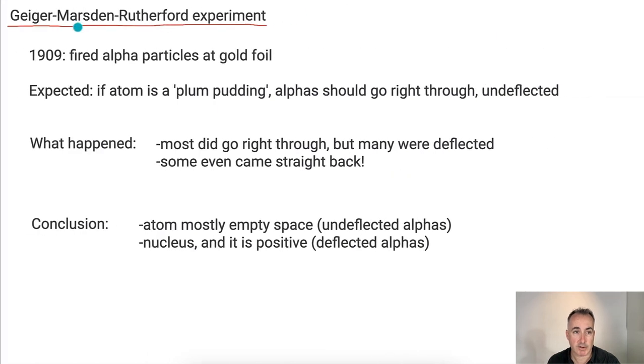Well, when they did this experiment in 1909, they fired these alpha particles at gold foil. So let's remind ourselves what are alphas and what's gold. So alpha, remember, is a helium-4. What's gold? Gold is AU, and it's got number 79 here and 197.